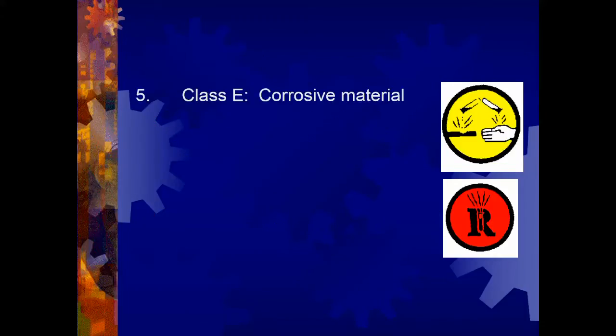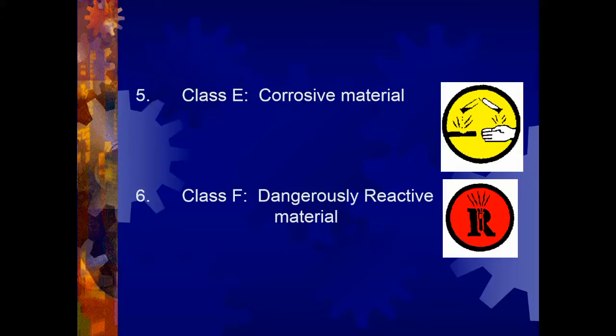Next, we have Class E for corrosive materials — similar to that bony hand on a bottle of bleach. This corrosive material might cause a rash or burning if directly on skin, or result in clothing or other materials decomposing due to contact.